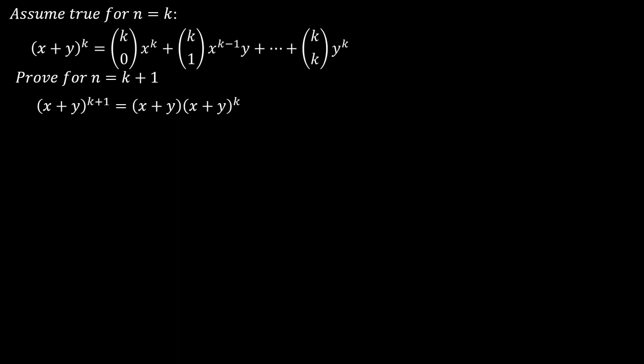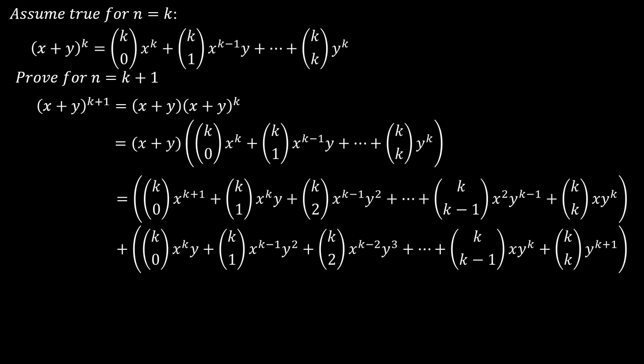x plus y to the k plus 1 can be written as x plus y times x plus y to the k, and because we assumed that the theorem is true for k, we can expand x plus y to the k as follows. Now I'm going to further expand x plus y, so first multiply everything by x, then multiply everything by y. Feel free to pause the video and verify the expansion here.